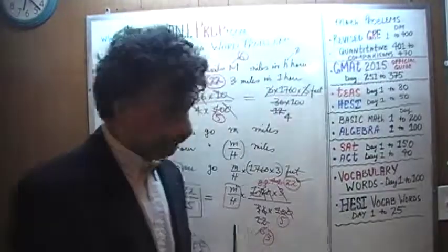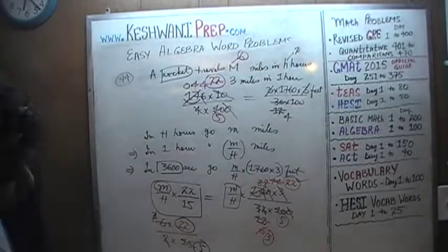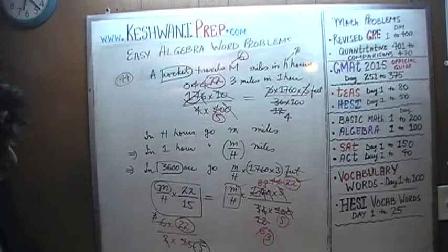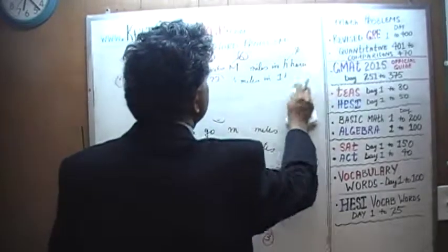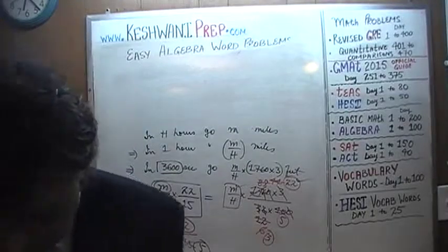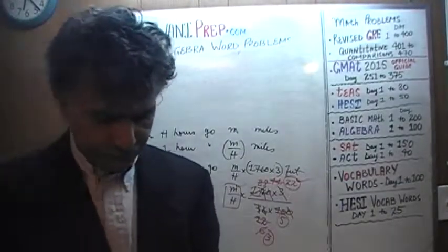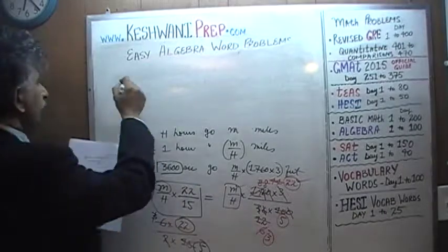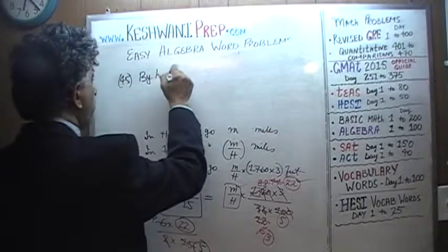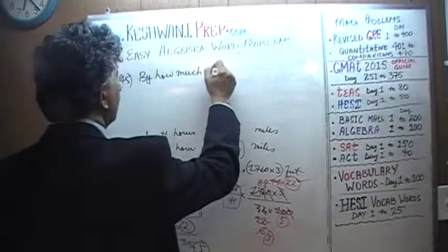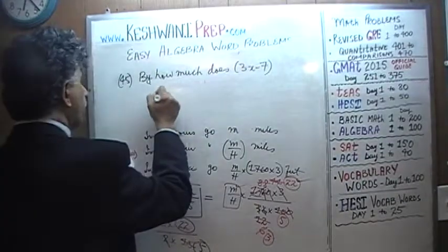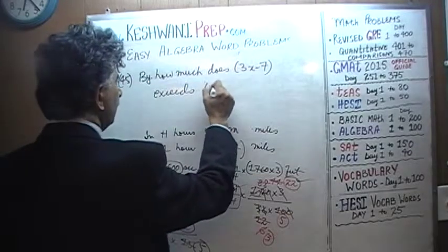Let's do the next problem, shall we? Problem number 45: by how much does 3x minus 7 exceed x plus 2?